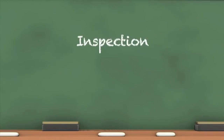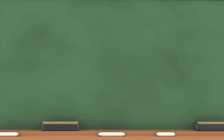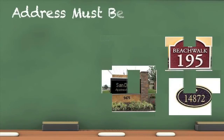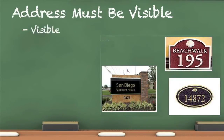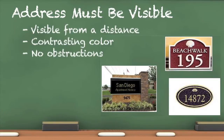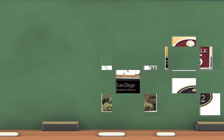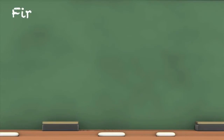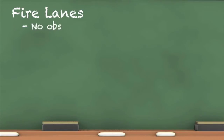Let's start the inspection. It is critical the address is visible. If we can't see the address, fire department arrival will be delayed. Fire lanes need to be kept clear at all times, and the markings need to be easily identified.